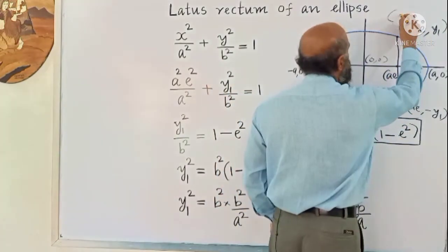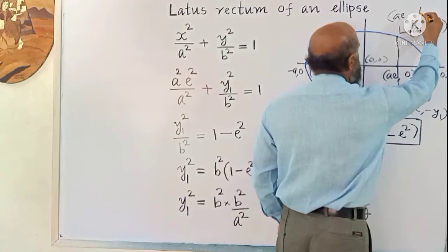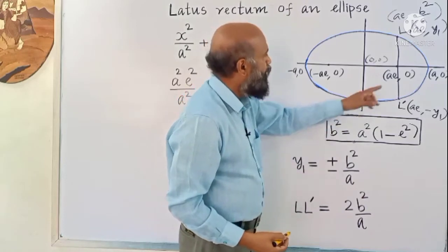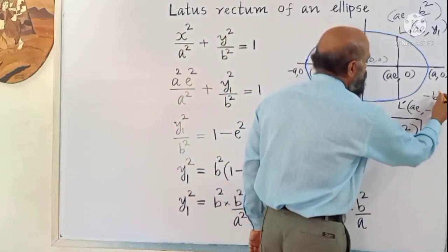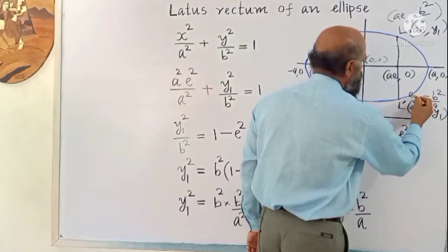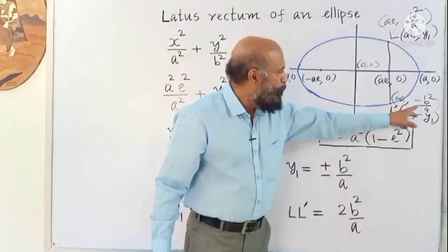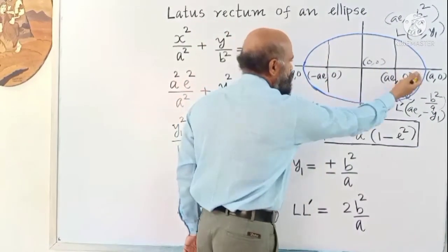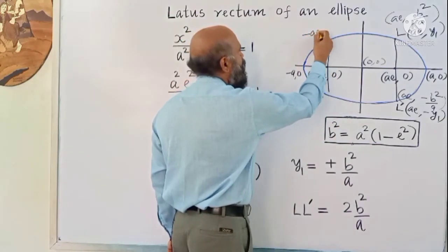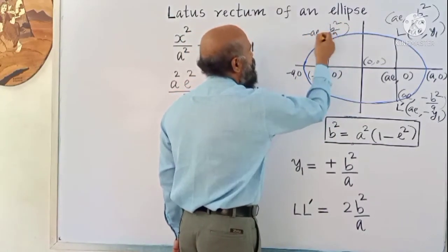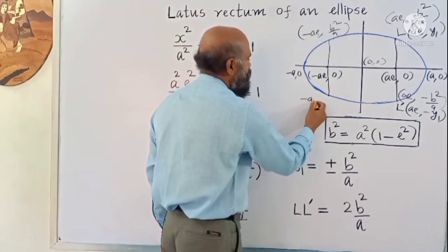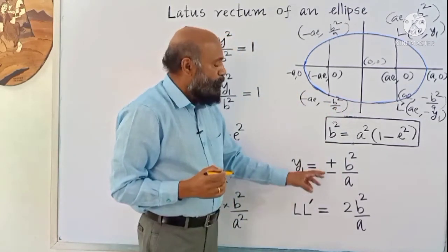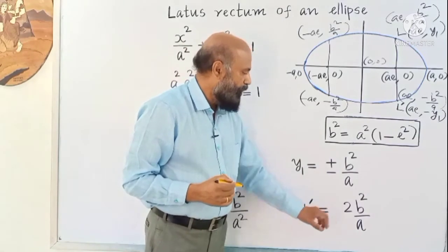So the coordinate of the upper point is (ae, b²/a) and the lower point is (ae, −b²/a). Similarly, on the other side, the coordinates are (−ae, b²/a) and (−ae, −b²/a).